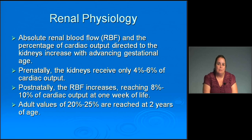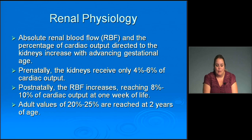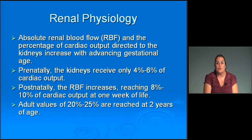The absolute renal blood flow and the percentage of cardiac output directed to the kidneys increases with advancing gestational age. Prenatally, the kidneys receive only about 4 to 6% of cardiac output. Postnatally, renal blood flow increases reaching up to 10% of cardiac output by one week of life in a term infant. Adult values of 20 to 25% are reached at two years of age.